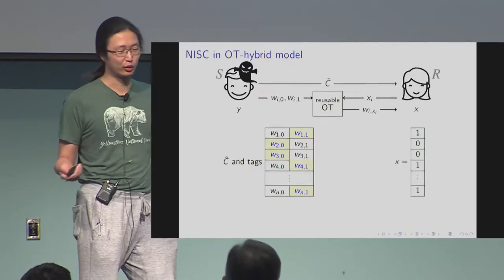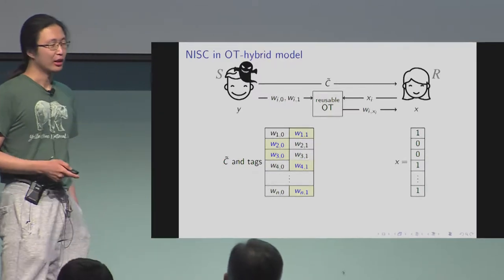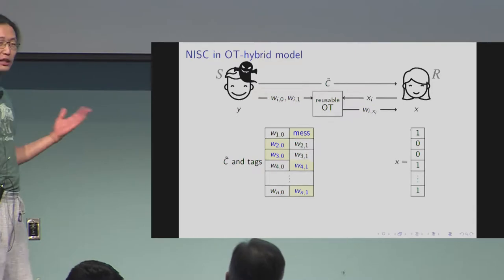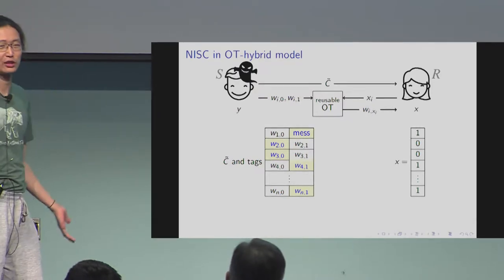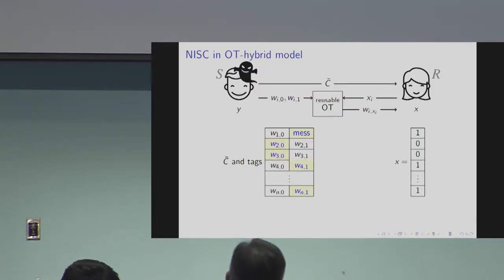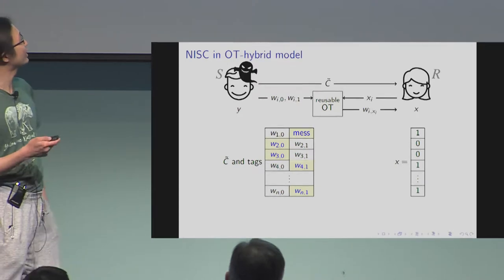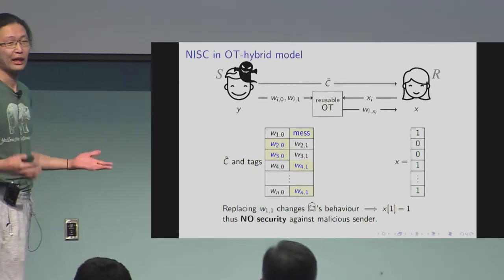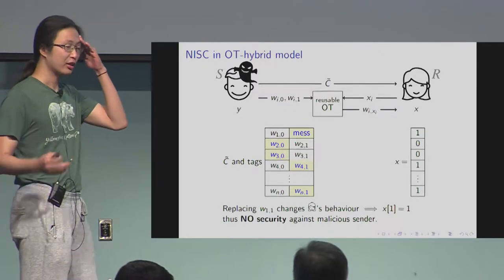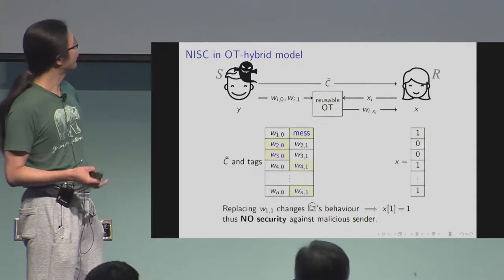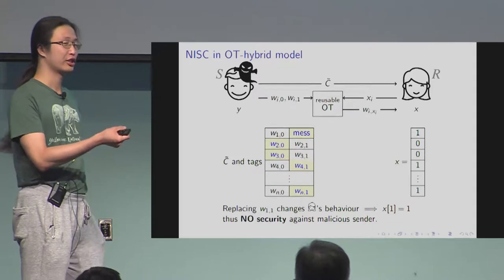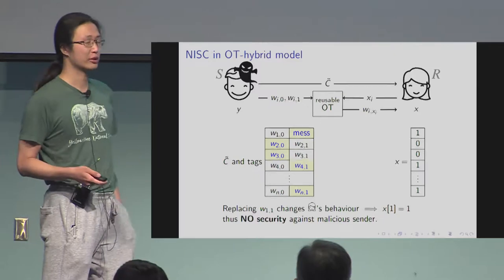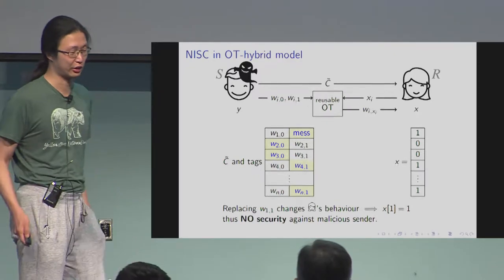So what goes wrong with the old protocol? In the garbled circuit protocol, when the sender is malicious, the sender might replace one of the input tags with some trash. If the receiver gets this trash, the receiver would behave accordingly, and the sender might learn that. If the sender finds that changing this input to trash changed the receiver's behavior, he knows the corresponding input bit, which violates security.